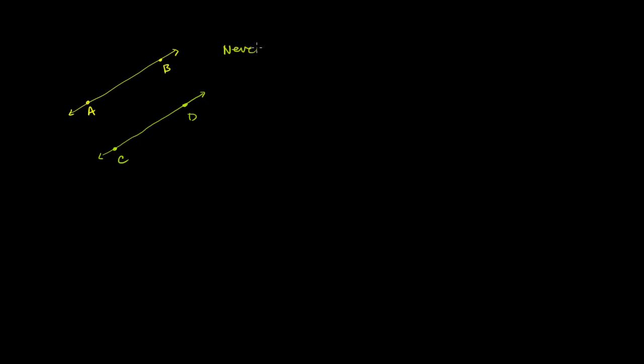And let's say that these lines both sit on the same plane — in this case, the plane is our screen or this little piece of paper that we're looking at right over here — and they never intersect. So they're on the same plane, but they never intersect each other.